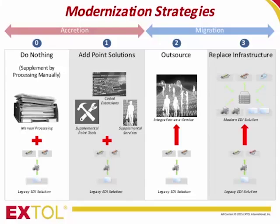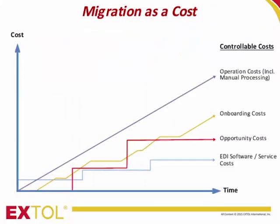I want to challenge the traditional view of migration as nothing but an unavoidable switching cost. It starts with a look at the components of EDI costs — EDI imposes four main kinds. EDI software and service costs include software support and maintenance fees, service subscriptions, and other recurring costs. Modernization isn't really targeted at this kind of cost, although some cost savings can occur in the form of consolidated license and maintenance fees if you're coming from a situation where you employed multiple point solutions.